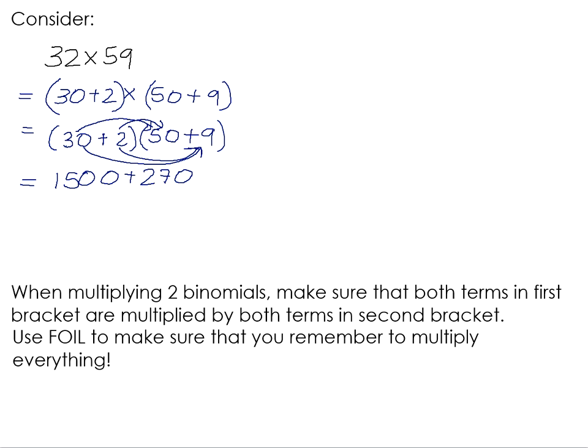Then we come to do the 2. We've now multiplied the 30 by both numbers. Now we need to do the 2. 2 times 50 is 100, and 2 times 9 is 18. If you now add all of these together, 100 plus 18 is 118. So we're going to have 1,500 plus 270 plus 118. That's 8, that's also 8, 2, 3 plus 5 is 8. So the final answer is 1,888.